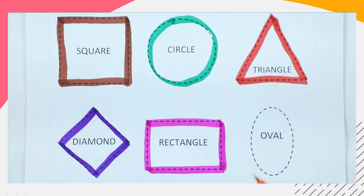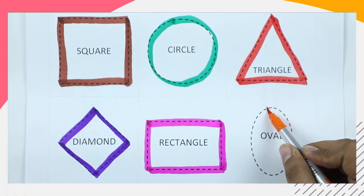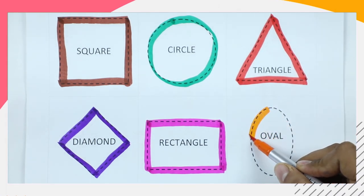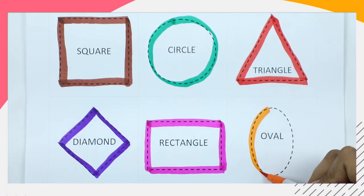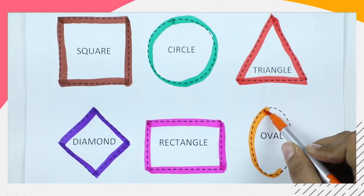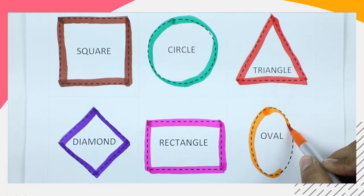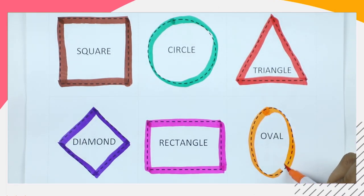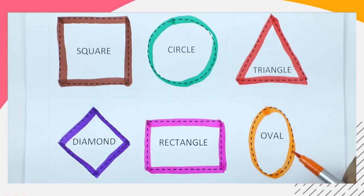Oval, we make an oval with orange color — it's an oval with orange color.